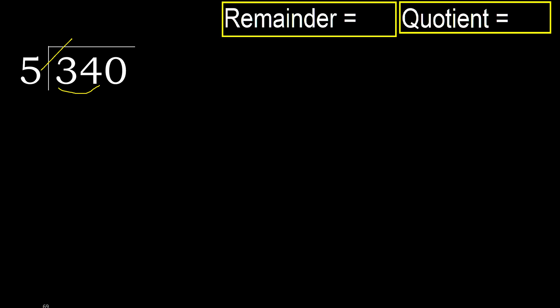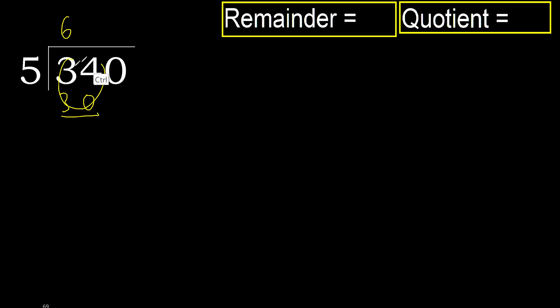...equals 35, which is greater. So try 5 multiplied by 6, which equals 30 — 30 is not greater. Subtract, then move to the next digit.